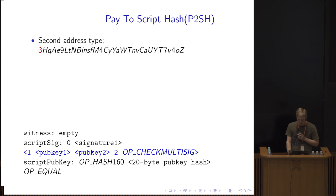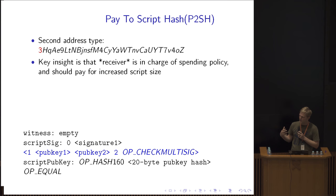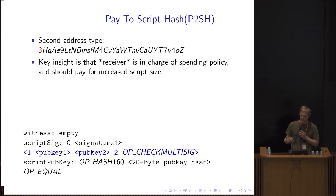Pay-to-script-hash is the second address type that was standardized, starting with a 3 on mainnet. The insight here is that the receiver is in charge of the spending policy, so if you decide you want a very large complicated script — like an 11-of-15 multisig or something like that — you should probably pay for it, not the sender. Previously with bare multisig, the sender would pay for all this upfront cost as well as on the blockchain.